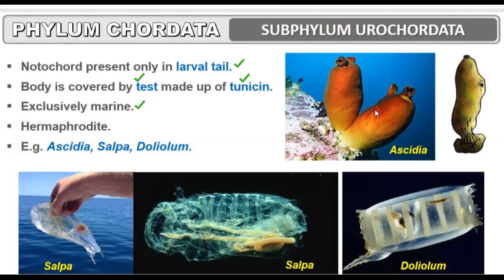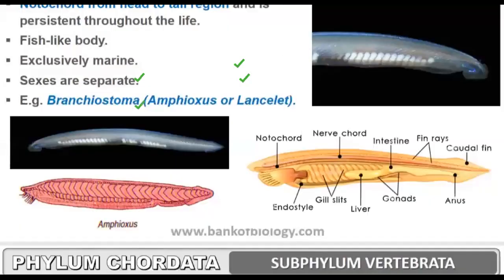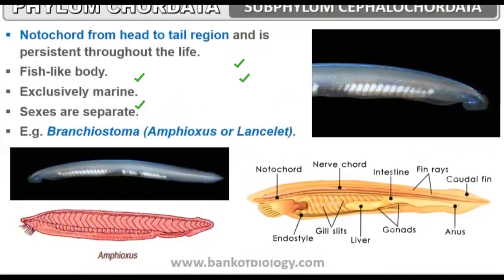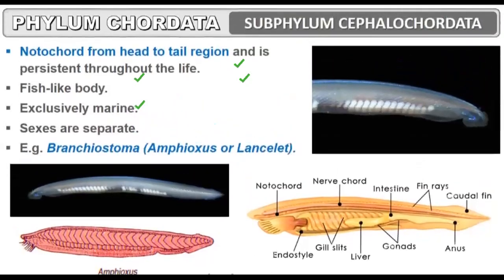In the case of these urochordates, the notochord is present in the larval tail. That is what makes them chordates — they have pharyngeal gill slits, a dorsal hollow nerve cord, and a notochord present at some stage of life.